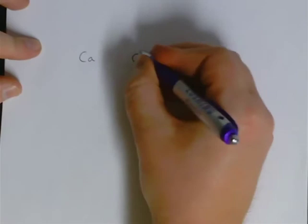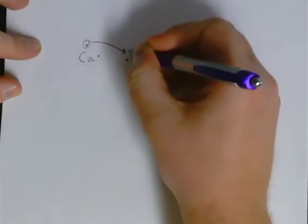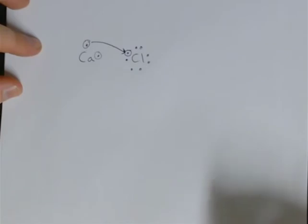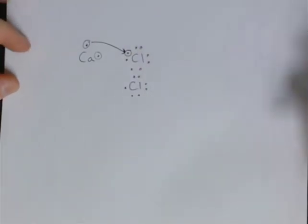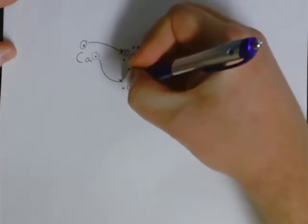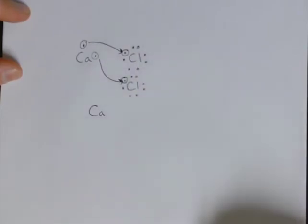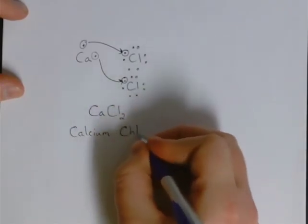If we have calcium and chlorine, chlorine still has seven valence electrons, but now calcium has two valence electrons. Calcium, being the metal, wants to give away its electrons. Chlorine happily takes one electron from calcium, but we still have one electron left over that calcium needs to get rid of. So the only way to satisfy this calcium atom is to have a second chlorine atom. In order for calcium and chloride to form a compound, we have a one-to-two ratio — the formula is CaCl₂. We keep the metal name calcium and change the ending on chlorine to chloride, the -ide ending.